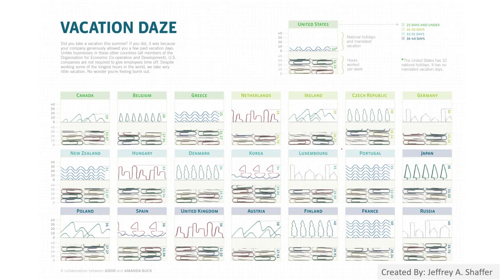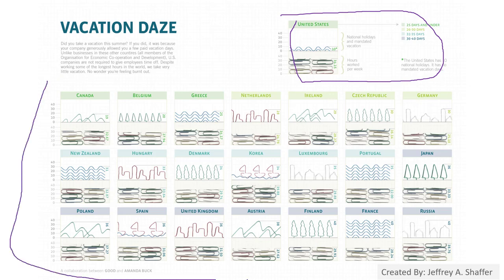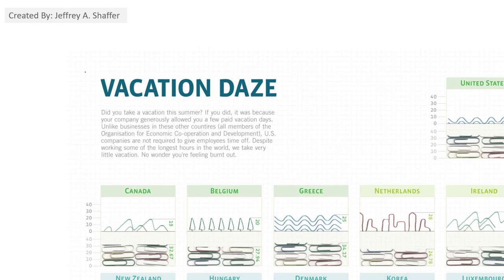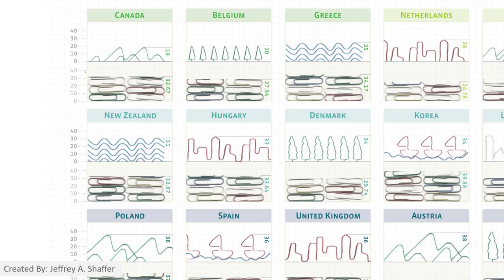This infographic is talking about vacation data. It has an example about the United States, and after you get familiar with interpreting the data for the United States, it's easier for you to understand vacation data in other countries. We can look at the details of other countries — it's really like an art.